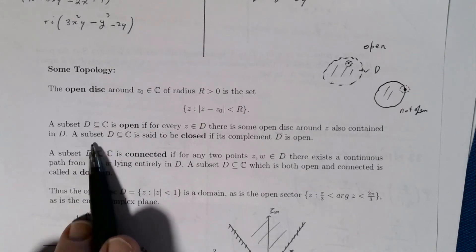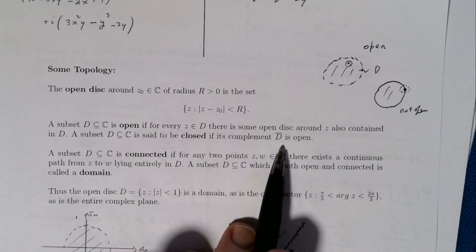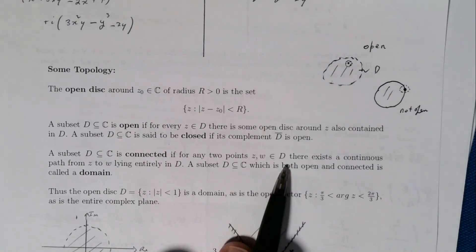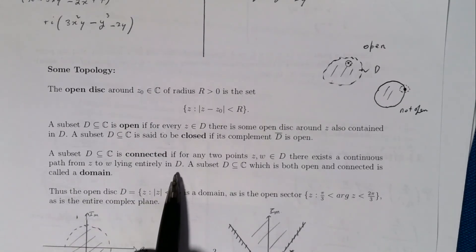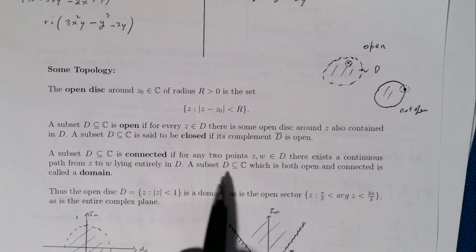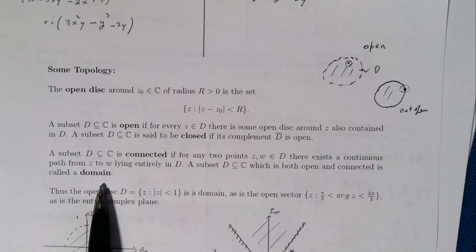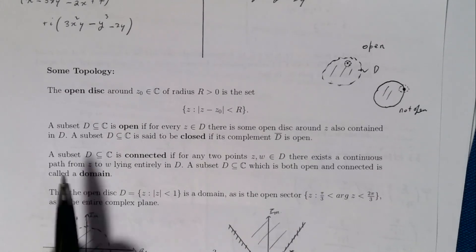On the other hand, if the boundary is included and you pick a point z on the boundary, there's not enough room to swing a cat — any ε-neighborhood will partly go outside D, so the set is not open. The subset D is a closed set if its complement D̄ is open. A set is connected if for any two points z and w inside it there is a continuous path from z to w lying entirely inside D. A subset of the complex numbers that is both open and connected is called a domain.